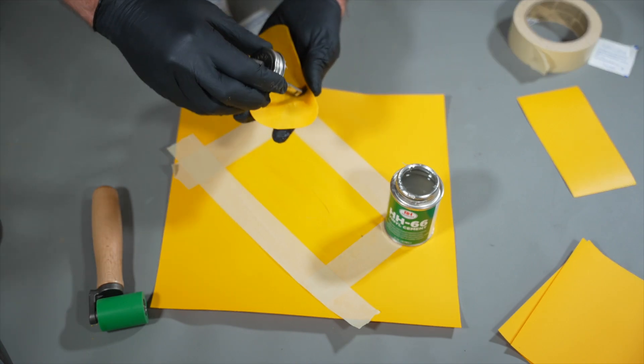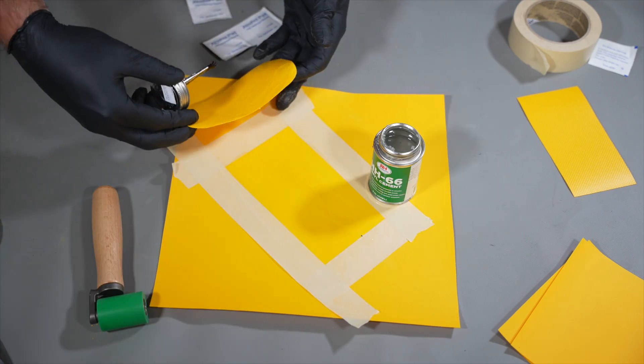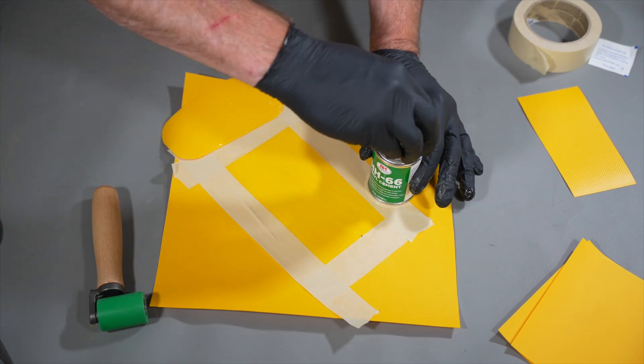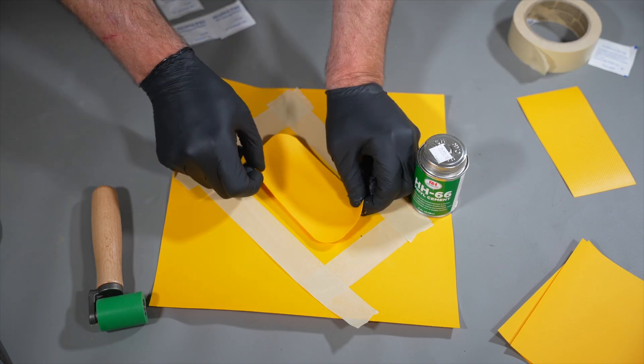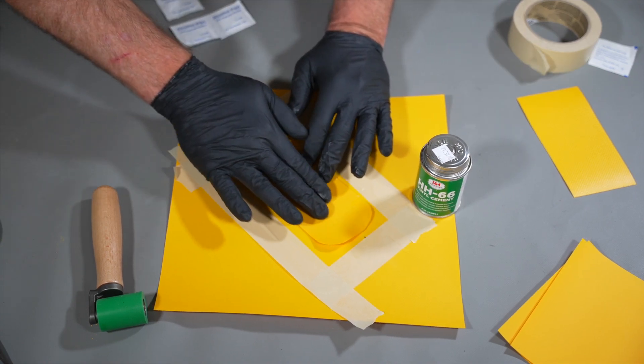Next, apply a second layer of adhesive to both surfaces and let this coat sit until it becomes tacky in texture. Once the glue has become tacky, apply the patch in a careful rolling motion to the masked surface of the diversion tube.